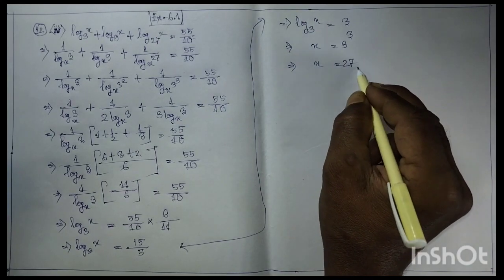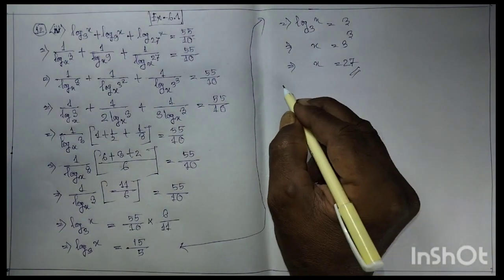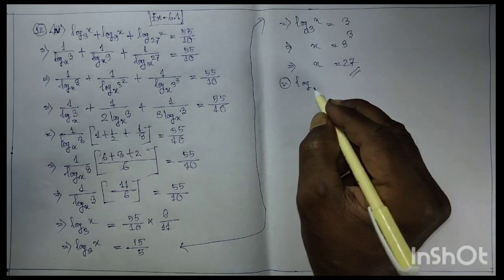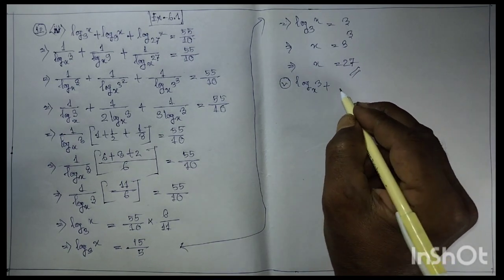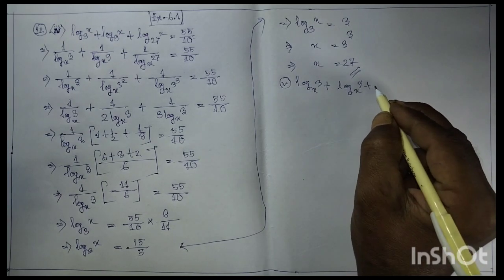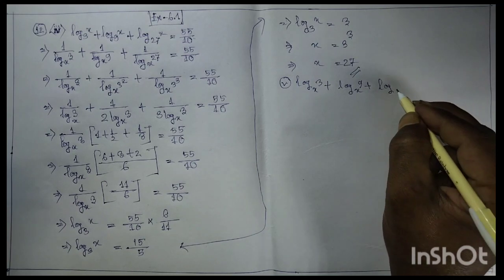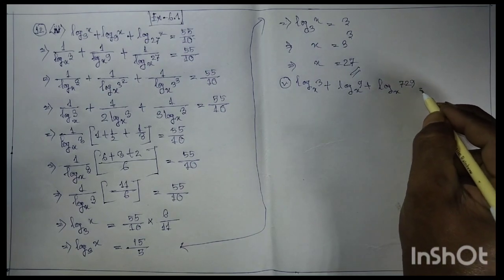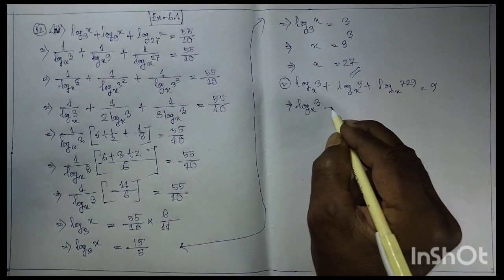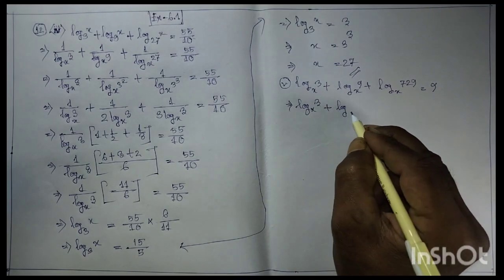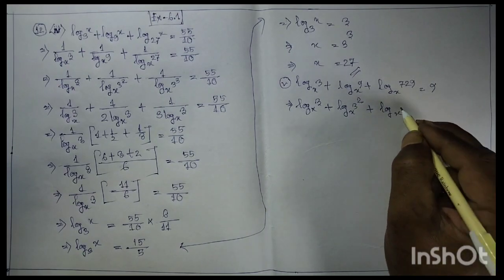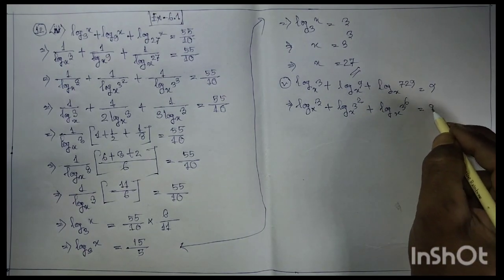Equation 5: log base(3wx) of x plus log base(9wx) of x plus log base(729wx) of x equals 9. This can be rewritten as log base(3wx) of x plus log base(3wx) of x plus log base(3wx) of x plus log base(3wx) of x equals 9.